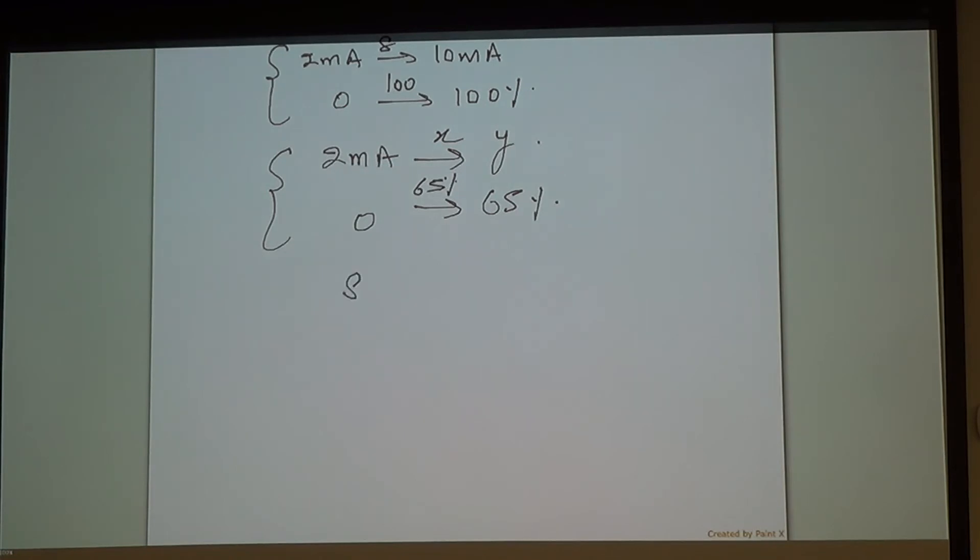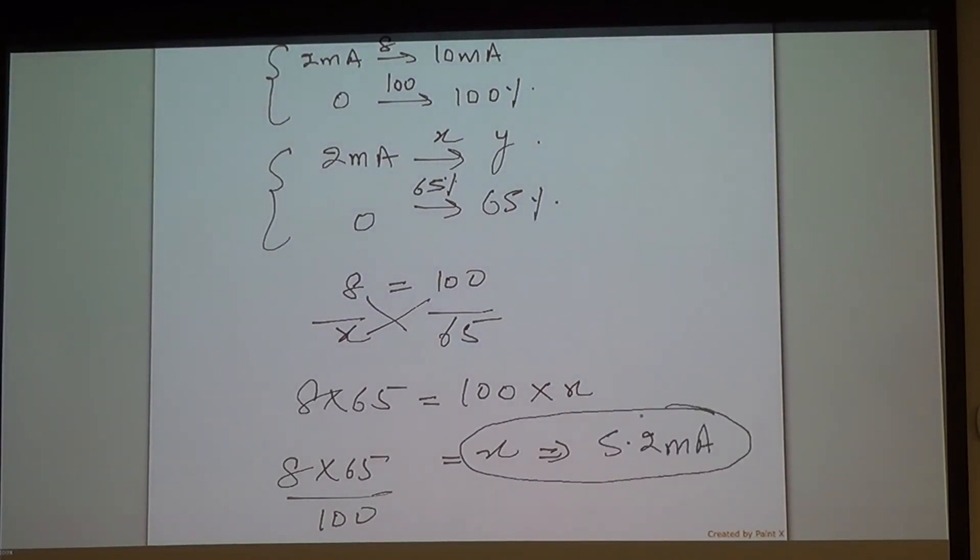Let's go put the numbers in. 8 brings the change of 100, X will bring the change of 65. Ratio proportion. Let's cross multiply. 8 times 65 is equal to 100 times X. What is my X equal to? 8 times 65 over 100. Please do the math for me. Give me my answer. 5.2 milliamps.